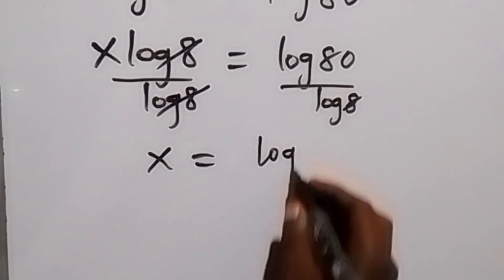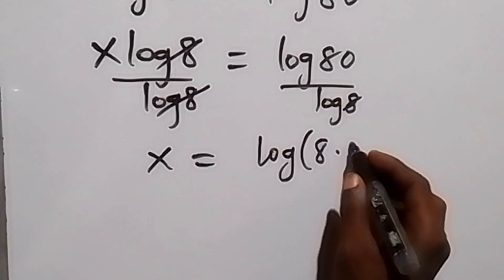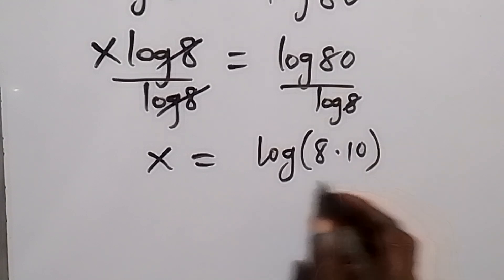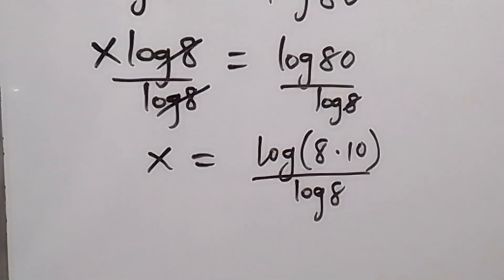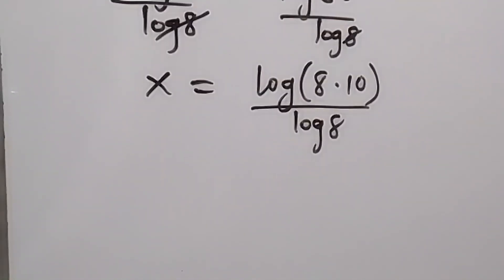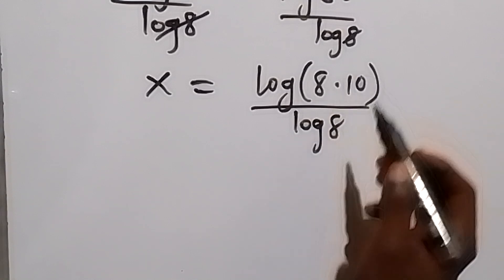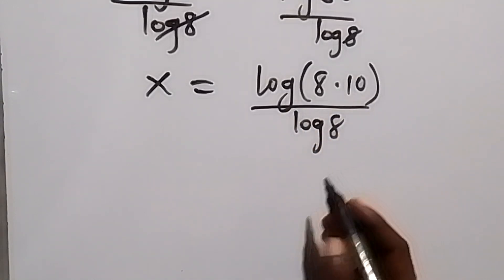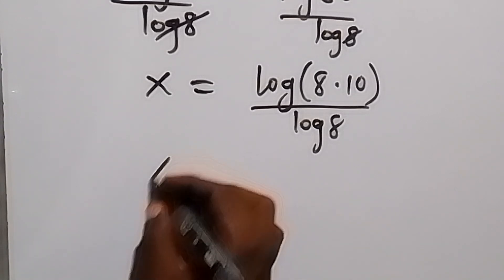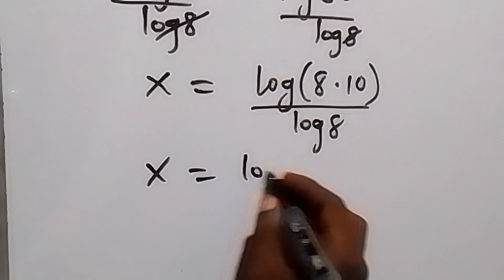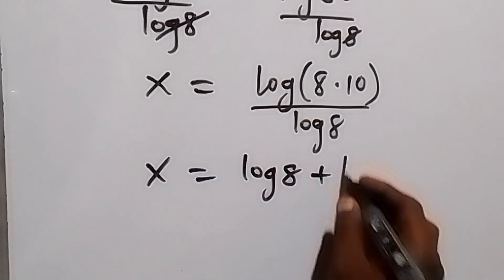We can separate log 80 by writing it as log of 8 multiplied by 10, then divide by log 8. Applying the law of logarithms — when we multiply two numbers we can separate into the sum of two logs — this gives x equals log 8 plus log 10, all over log 8.